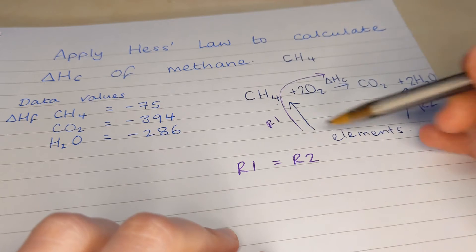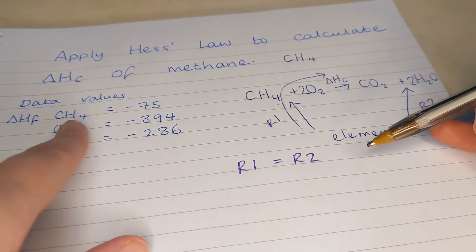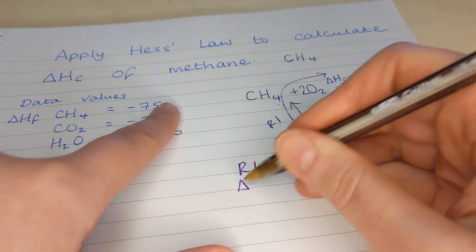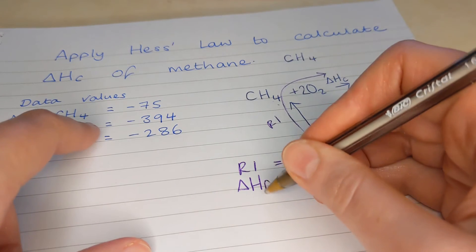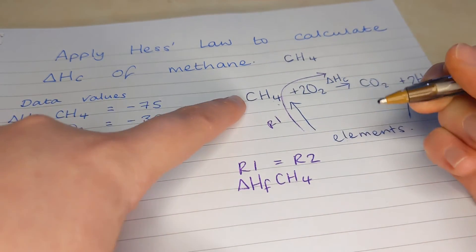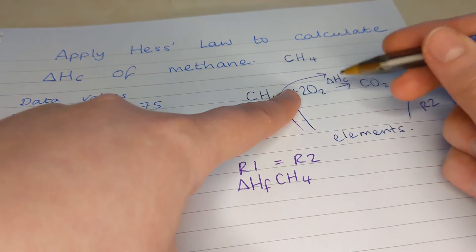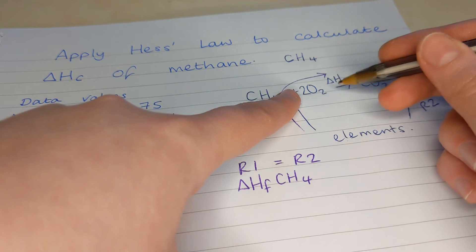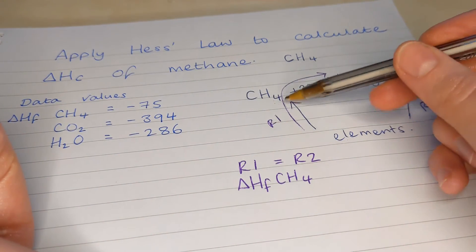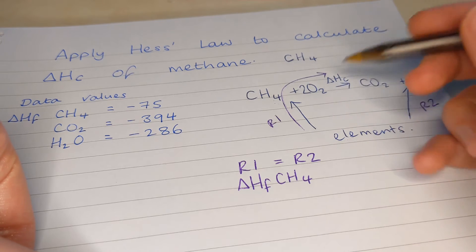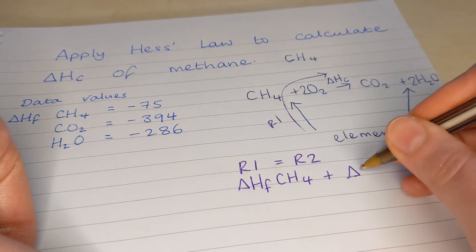The next thing I'm going to do, I'll write this in purple, is collect the terms involved. Route one equals route two. So in route one, we have methane being formed from its elements. And over here, we've got some data values. So first, I'm going to write it in symbols. Then I'll put my numbers in so you can see exactly what I've done. So delta H formation of methane. We don't have a formation value for oxygen because it's an element. It's diatomic, but it's still an element in its standard state. We can't form an element. It's already in its simplest form. So there's no value for this. Delta HC, what we're trying to calculate is also part of route one. We're following these two arrows going clockwise. So let's add that on.